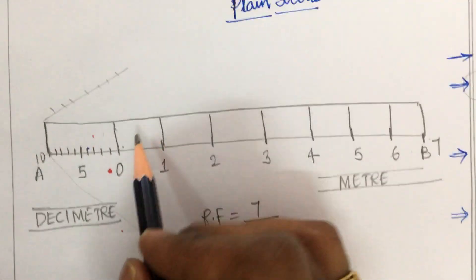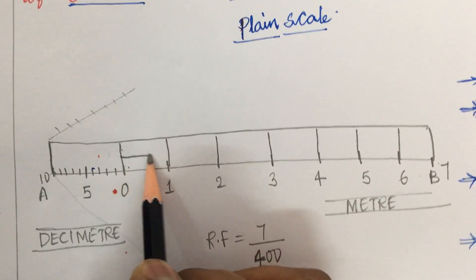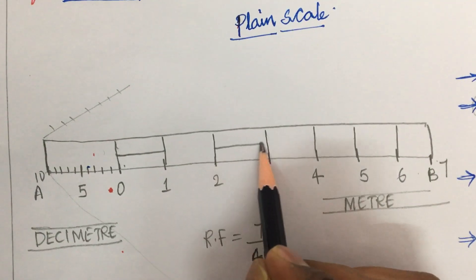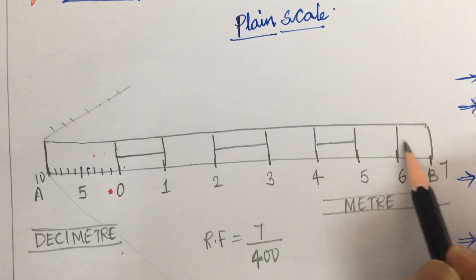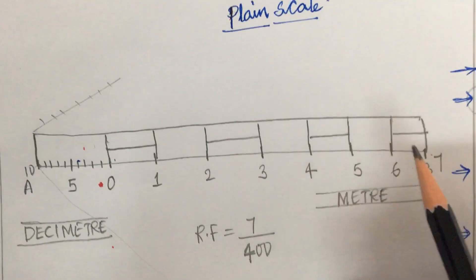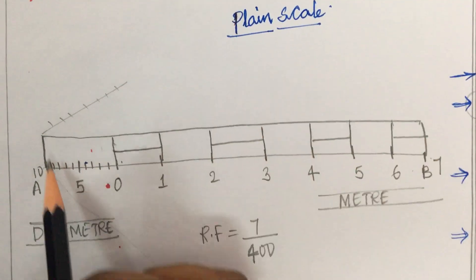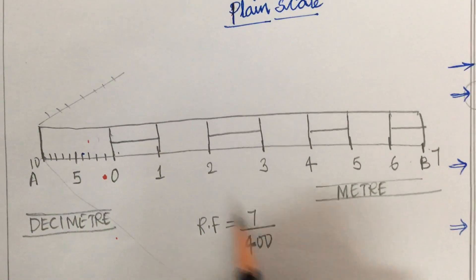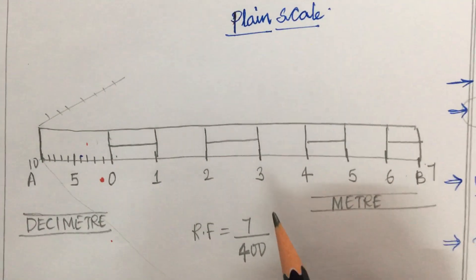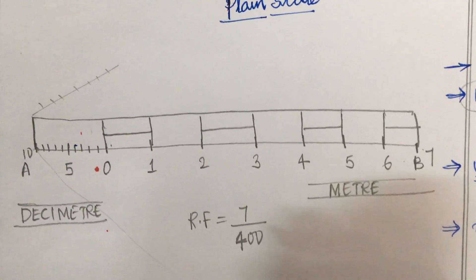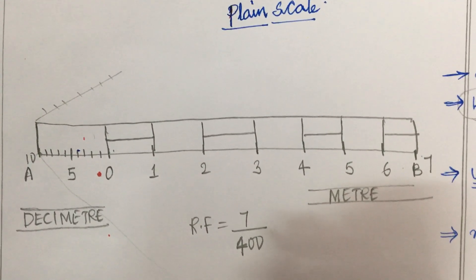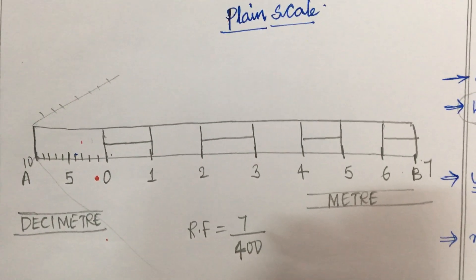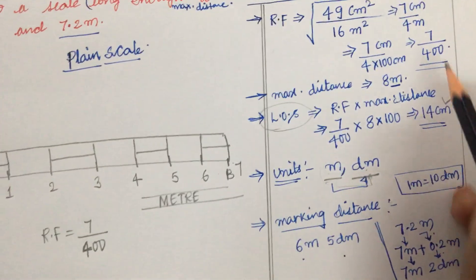Now draw parallel lines to AB exactly in the middle of the scale to give the scale a proper appearance. The scale outline should be drawn in HB pencil. Lettering and numbering must also be done in HB pencil, while all general construction lines should be done in 2H or H pencil. Make sure your handwriting and numbering are neat to score well.